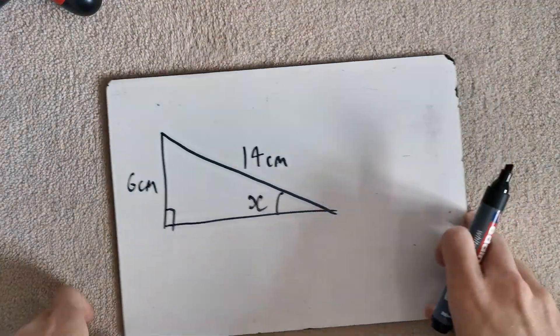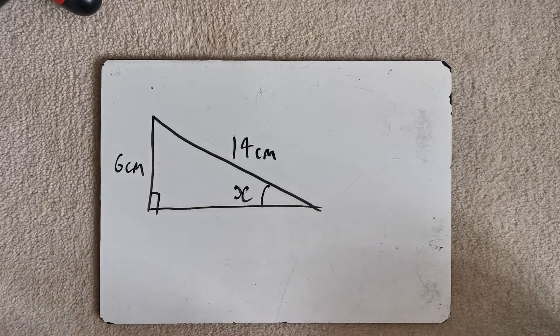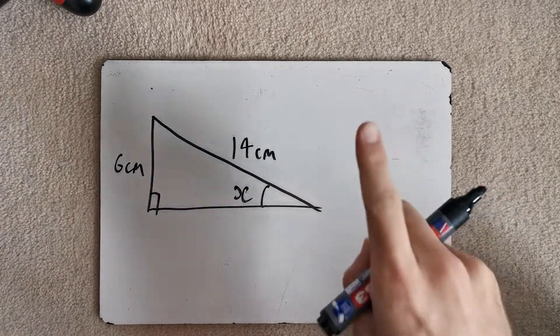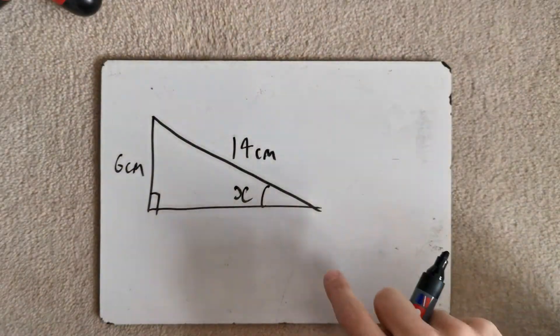So I'll put that just to the side. We might need that board again at some point. Right, here's a typical problem for you. We've got two sides and an angle labeled. Step one with every single trigonometry question, like we did here, we're going to label the sides.